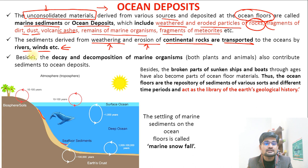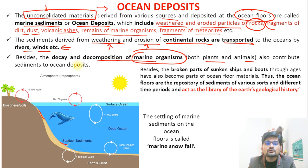Besides this, the decaying and decomposition of marine organisms — the flora and fauna, both plants and animals — also contribute to the ocean deposits. That is one of the most important points to remember here.